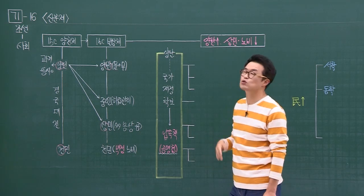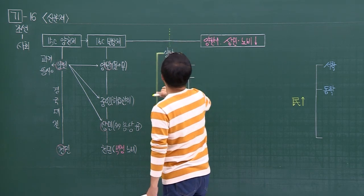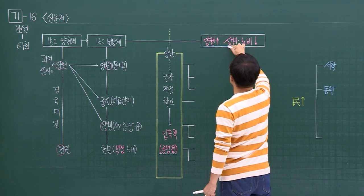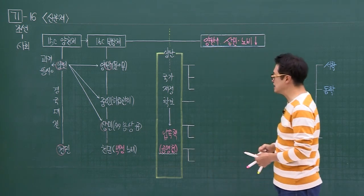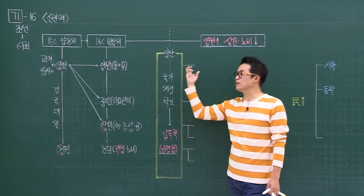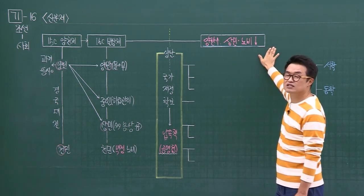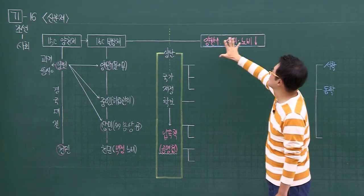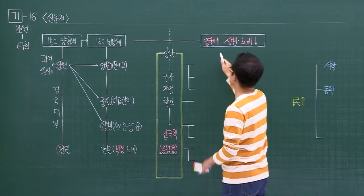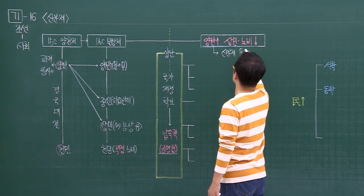조선 후기가 되면 양반 수는 증가하고, 상민과 노비의 수는 감소하게 됩니다. 이런 납속책, 공명첩 방법들을 통해서 많은 상민들이 양반으로 점프하는 모습을 보이게 되더라는 것이죠. 양반 수는 증가하고 상민과 노비의 수는 감소하는, 즉 신분제의 동요. 지금 신분제가 흔들리고 있다라는 것을 보여주고 있잖아요.